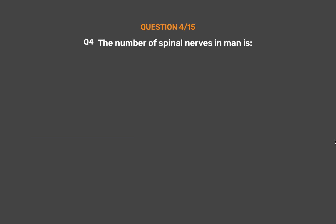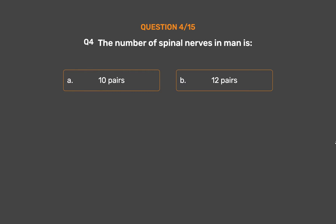Question No. 4. The number of spinal nerves in man is: Option A - 10 pairs. Option B - 12 pairs. Option C - 21 pairs. Option D - 31 pairs.